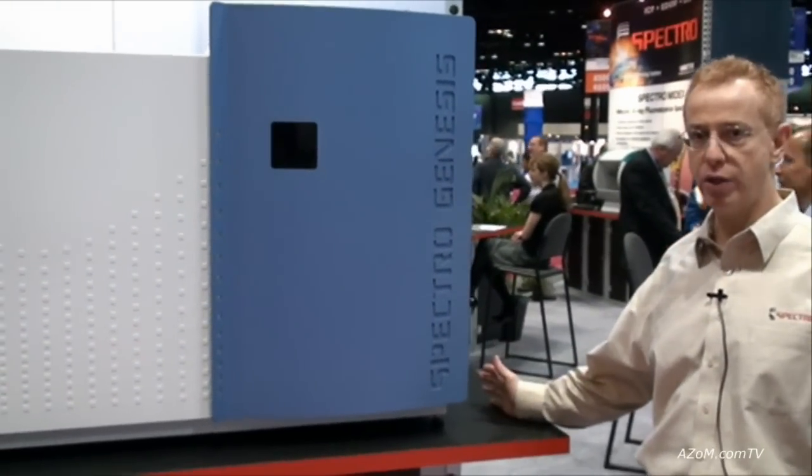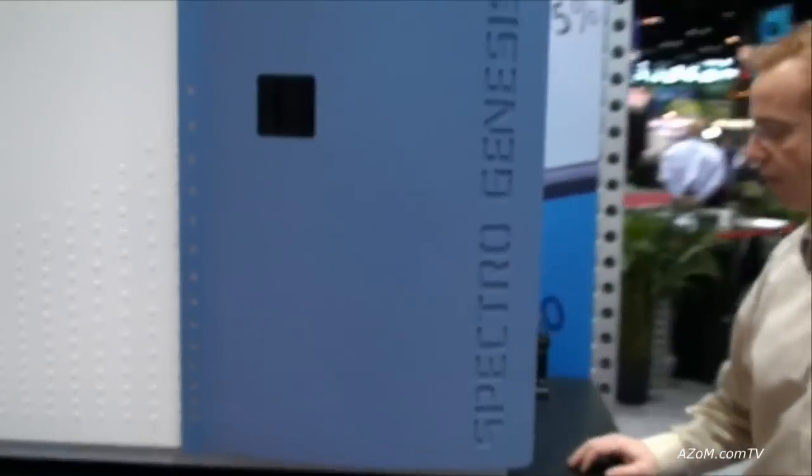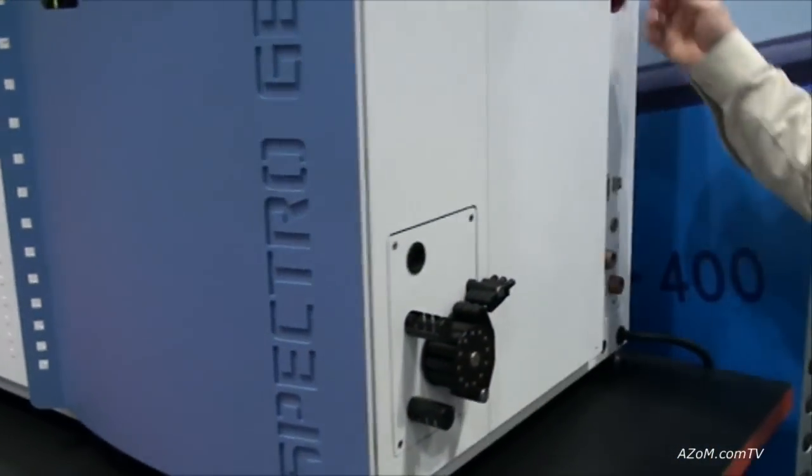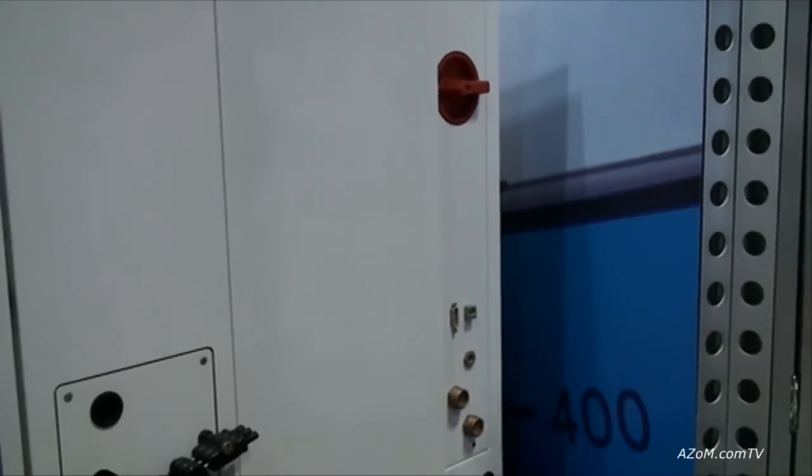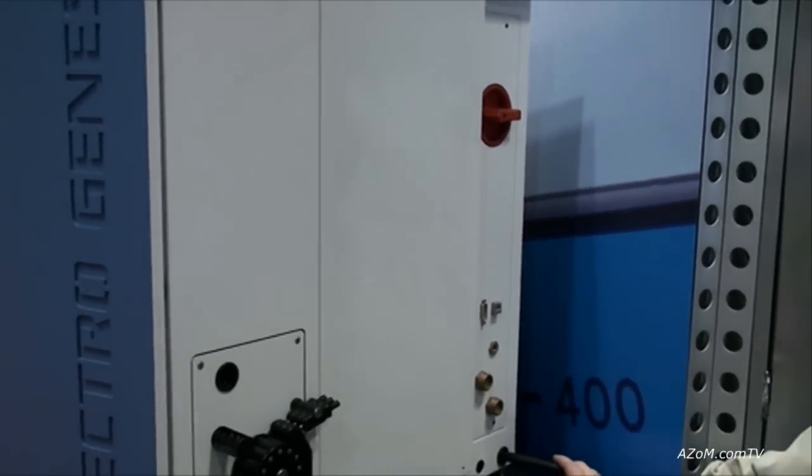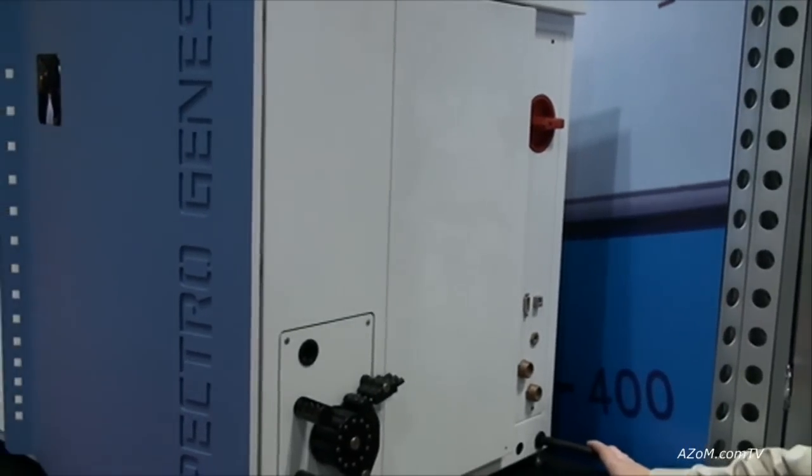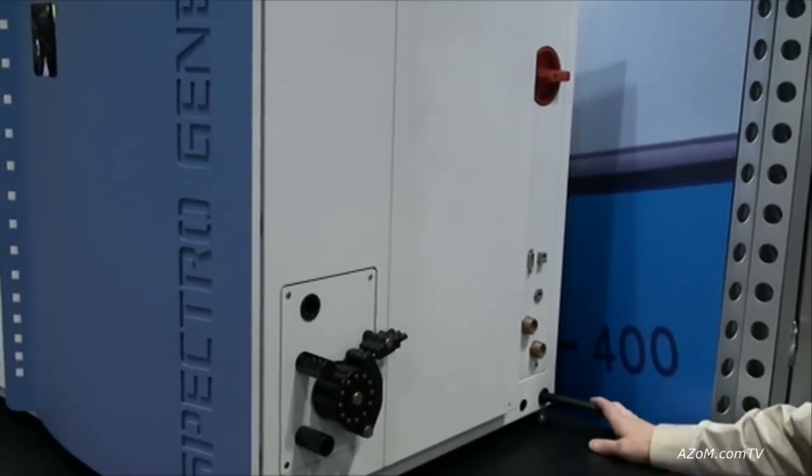All the utilities for the system sit on the side here. There's a peristaltic pump, the main power button, communications, gas line and any water lines. There's only one power cord which requires 220 volts at 30 amps.